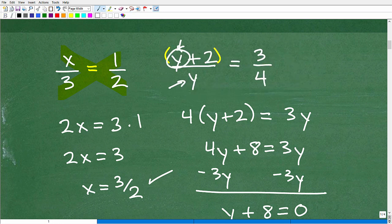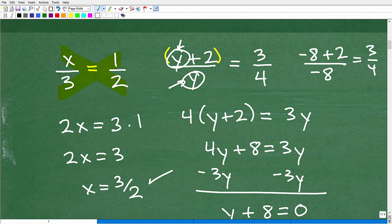So we'll put in a negative 8 right here. That's what we're thinking the solution is. So negative 8 plus 2 over negative 8, is that equal to 3 fourths? Well, let's check this. Negative 8 plus 2, that's negative 6 over negative 8. And if I reduce that fraction, negative over negative is positive. And this reduces down to 3 fourths. So in fact, negative 8 is in fact the actual solution.